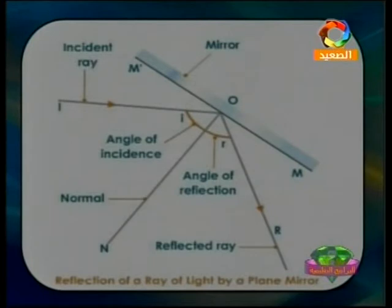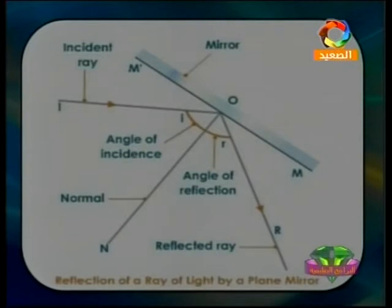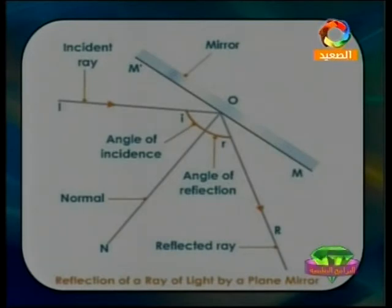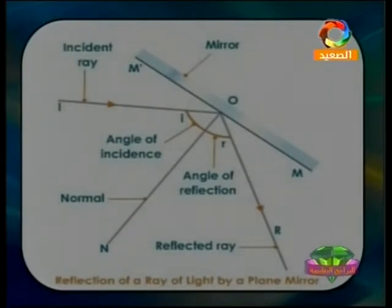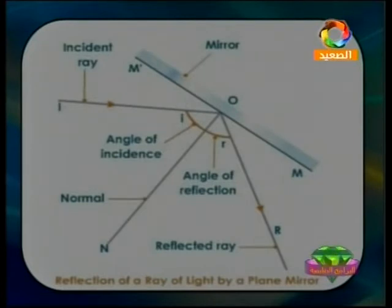Here is an important diagram showing the reflection of light rays by a plane mirror. We have the plane mirror, the incident light ray, the reflected light ray, and the normal line represented by N. The angle of incidence is the acute angle between the incident light ray and the normal line. The angle of reflection is the angle between the normal line and the reflected light ray.